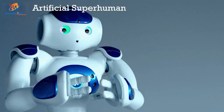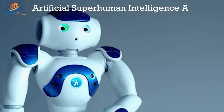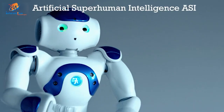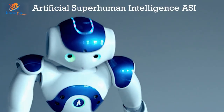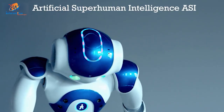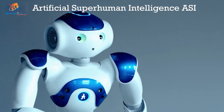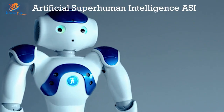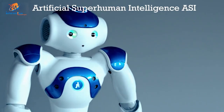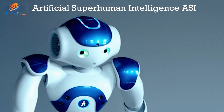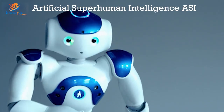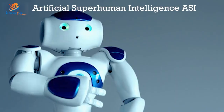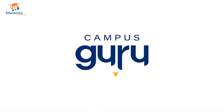Artificial superhuman intelligence (ASI) is artificial intelligence that possesses the ability to do everything that a human can do and more. An example is the Alpha 2, which is the first humanoid ASI robot.